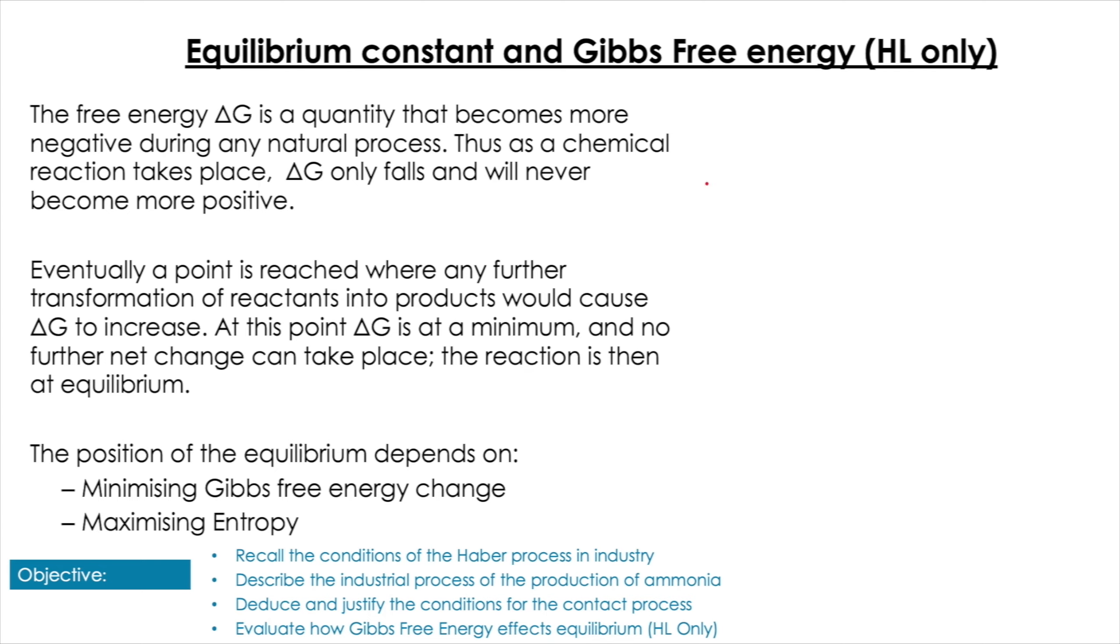Because free energy is a quantity that becomes more negative during a process, we can imagine, you know, if we have A going to and from B, we start at any arbitrary point, any ratio, any combination of these things. If we say that on the line on the left-hand side is 100% A and the line on the right-hand side is 100% B, and ΔG goes up as we go up both lines.